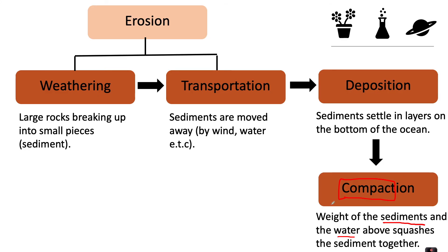You can imagine: if sediment was settling at the bottom of the sea in layer after layer after layer, you've got lots of water on top pushing down and the weight of the sediment itself. This compaction stage is when it all squashes together.